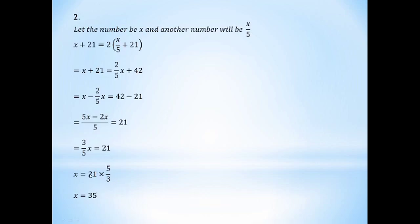So 5x minus 2x: with LCM 5 applied, we get 3 by 5 x equal to 21.